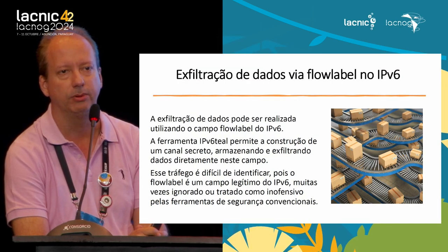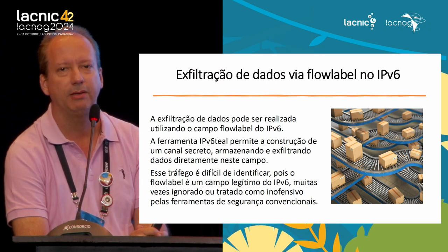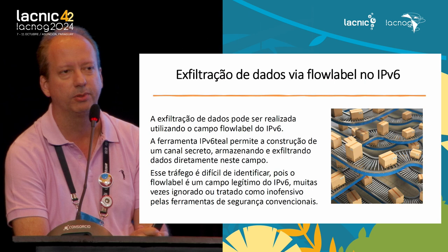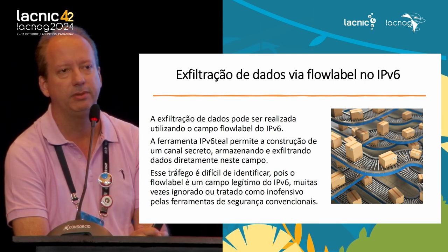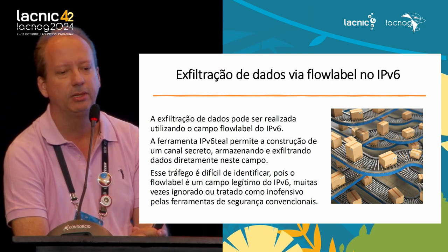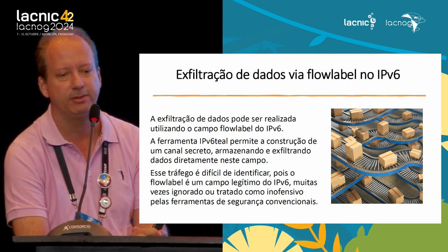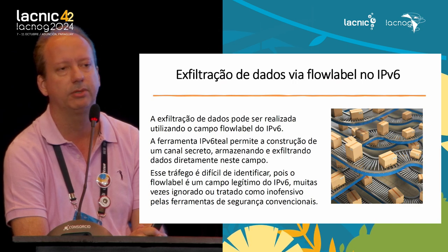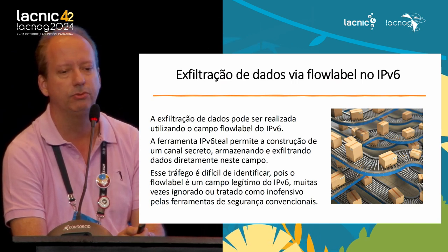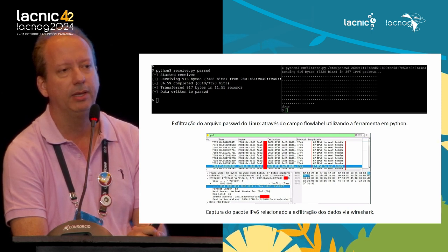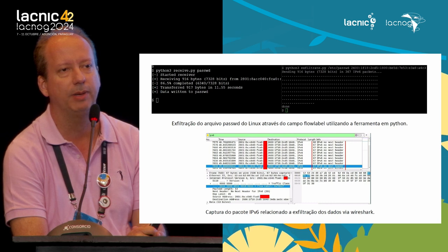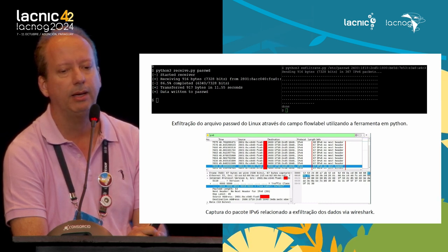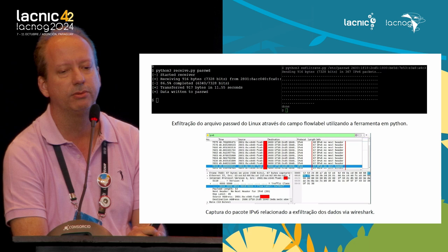Another type of data exfiltration that is part of the IPv6 protocol occurs through the flow label field, which is a new field in IPv6. The tool IPv6teal allows building a secret channel that enables filtering data through that field. This is a legitimate field that many tools do not monitor, providing an opportunity for hackers to produce data leaks in the user's network. At the top we have an example of a Python tool producing a data leak of a password file, and below in Wireshark we have a screenshot of that data leak related to the flow label field.